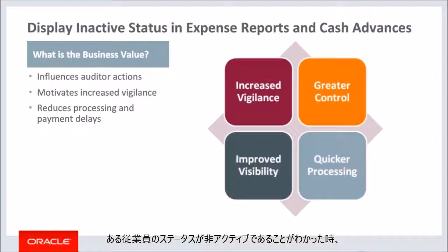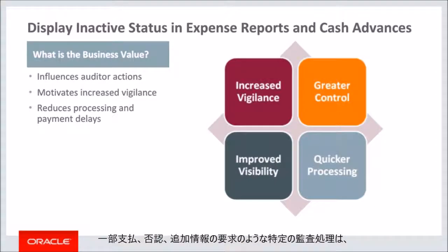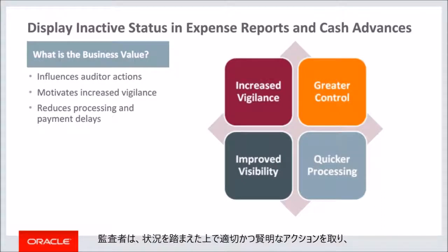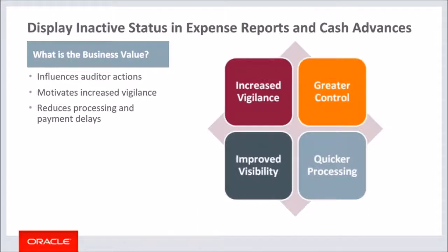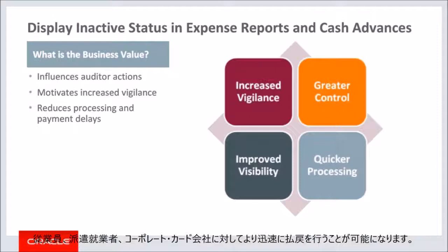When auditors know that a person has an inactive employment status, they have a holistic view of the life cycle of the expense report. Certain audit actions may impact the rate of reimbursement, such as short paying, rejecting, or requesting more information. Given the nature of the situation, auditors can take action accordingly and judiciously, and may be more precise in evaluating the impact of any actions they take. By being more exacting upfront, the result will be quicker reimbursement to employees, contingent workers, and corporate card providers.